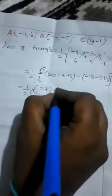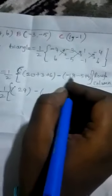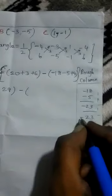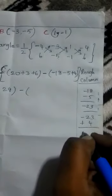Now simplify: 1/2. Since everything is positive, add: 20 + 3 = 23, 23 + 6 = 29. Now -18 minus -5, both are negative so add and write minus sign: -18 - 5 becomes -23. Then with that -23 you should add +4, so -23 + 4 equals -19.